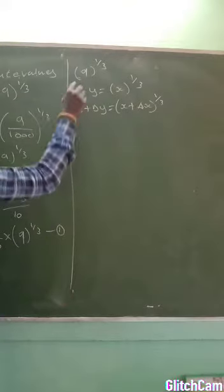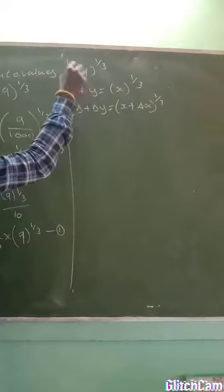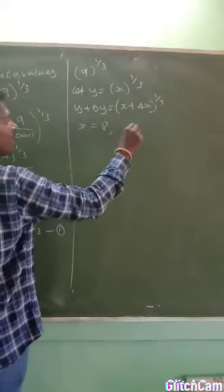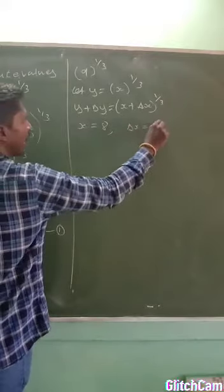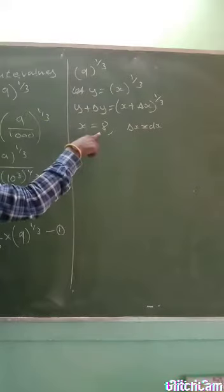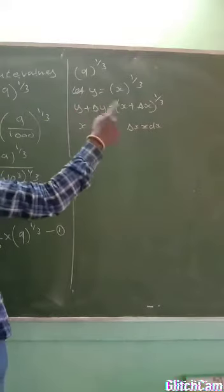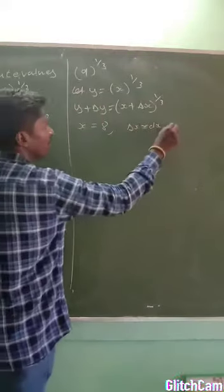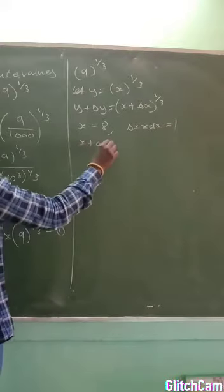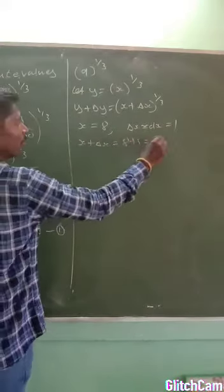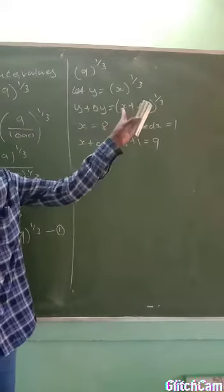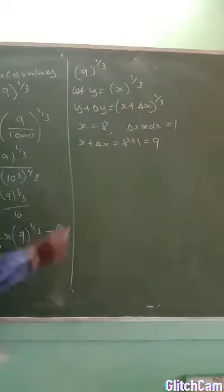Now I need to assume a value for x. Since we want to reach 9, I will assume x = 8, and then dx = 1. That gives us x + δx = 8 + 1 = 9, which is exactly what we need.